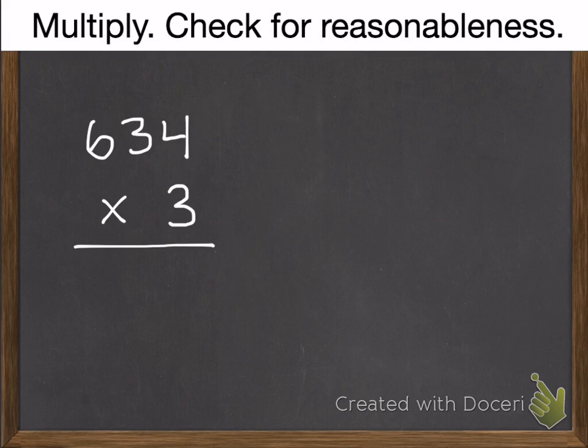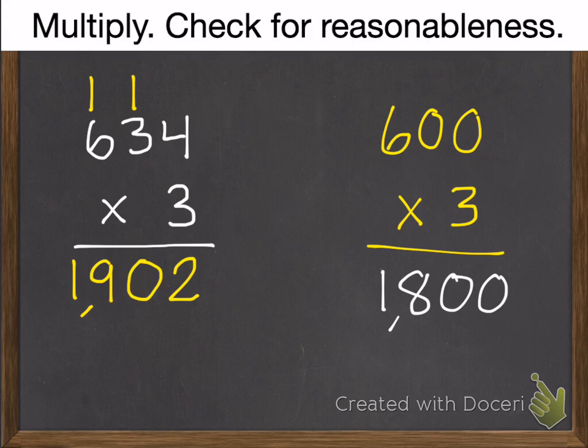Okay, here's your first practice problem. We'll start you off with the hundreds. So six hundred thirty-four times three. Go ahead and pause. If you're stuck, you can go back and watch those examples again. And then unpause it when you're done. Okay, three times four is twelve. Three times three is nine, plus one is ten. Three times six is eighteen, plus one is nineteen. Check it, and we get one thousand eight hundred, which is very close to one thousand nine hundred two. So that is reasonable.